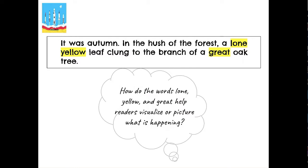If you were to close your eyes and I read this sentence to you, I want you to try to picture what is happening. Go ahead, close your eyes. Try to picture what is happening. Think about how the words that are highlighted yellow — lone, yellow, and great — help you picture what is happening.